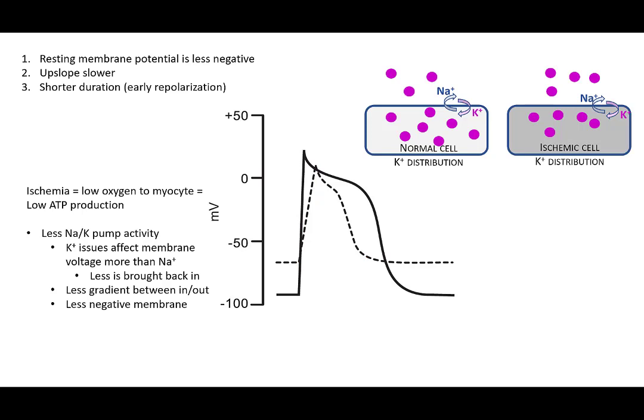So in an ischemic cell, we'll talk about the first issue. We see here that our resting membrane potential is less negative. So in a normal cell, and notice that the pink dots I'm only representing potassium. Yes, sodium is very, very important.